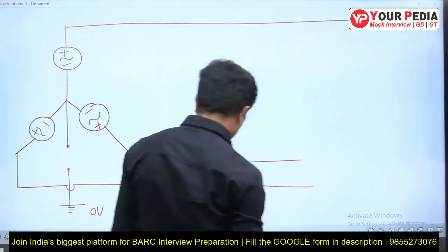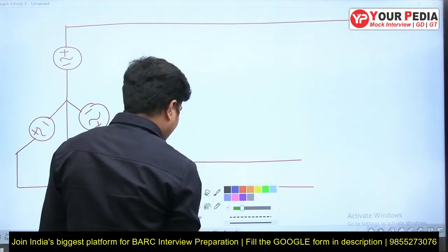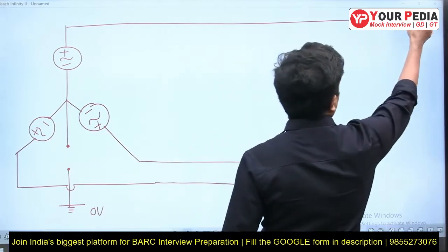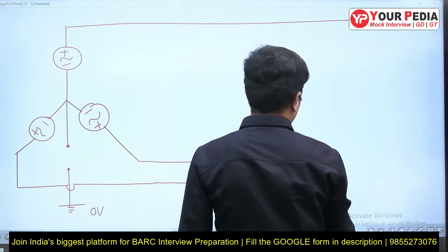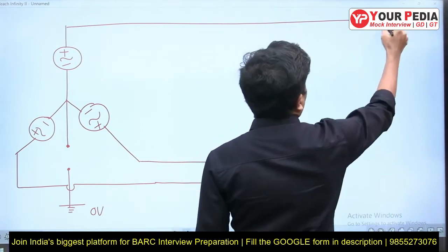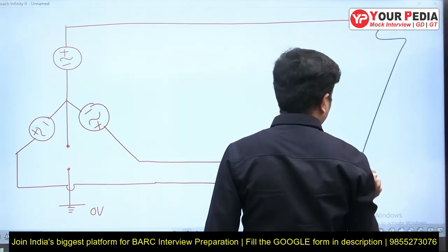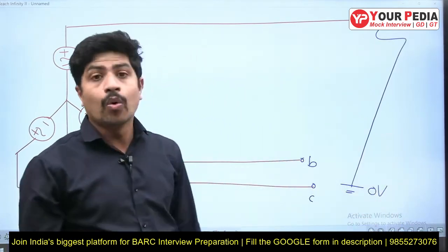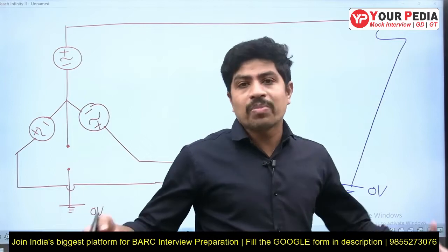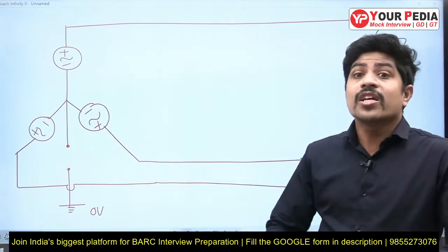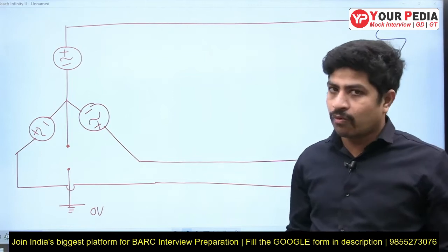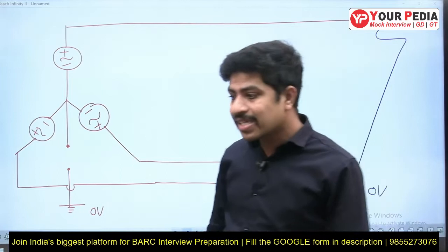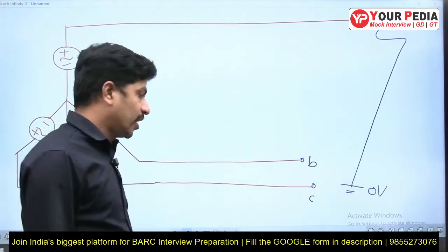A line-to-ground (LG) fault occurred on phase A. Now the question is: is there any closed path for the flow of fault current or not? If there is no closed path, fault current will not flow. If there is no fault current flowing, is this case an advantage or a disadvantage with respect to the power system?